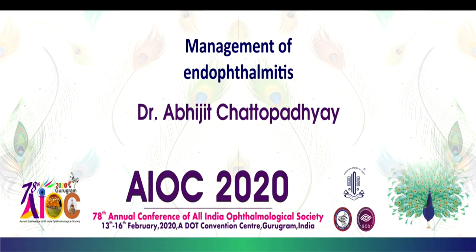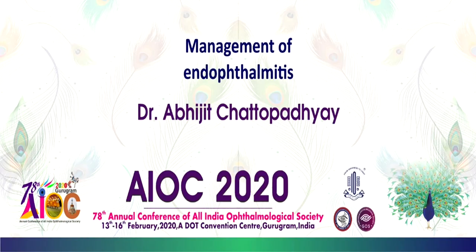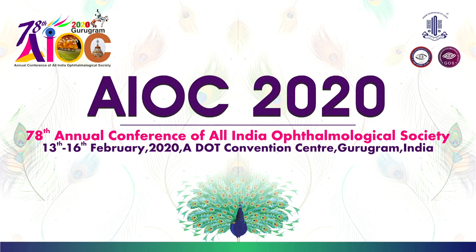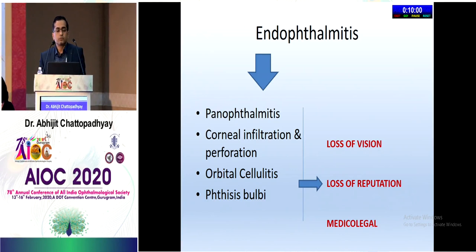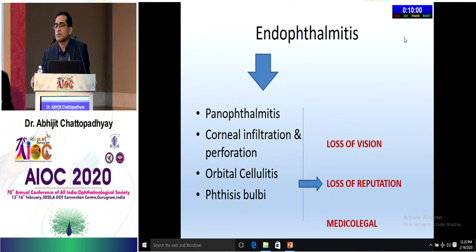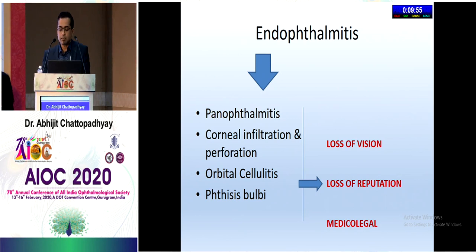Dr. Abhijit from Priyambada Birla Eye Hospital, Kolkata, discusses management of endophthalmitis. The most dreaded complications if inadequately treated are panophthalmitis, corneal infiltration and perforation, orbital cellulitis, and phthisis bulbi — resulting in loss of vision, loss of reputation, and medicolegal complications. Clinical findings for diagnosis include corneal and conjunctival edema, corneal scleral infiltrate, AC cells, fibrin, hypopyon, pupillary reaction, and moderate to poor red reflex with poor retinal visibility.